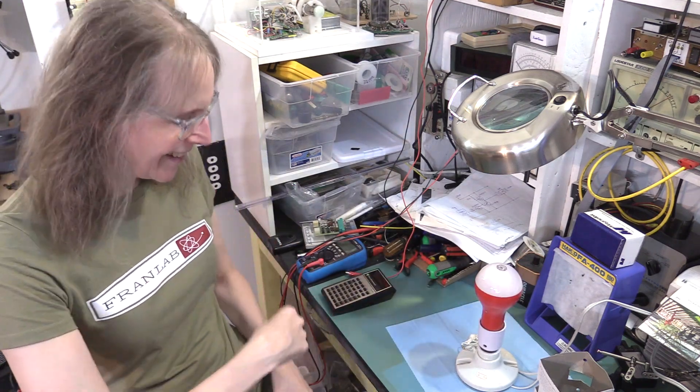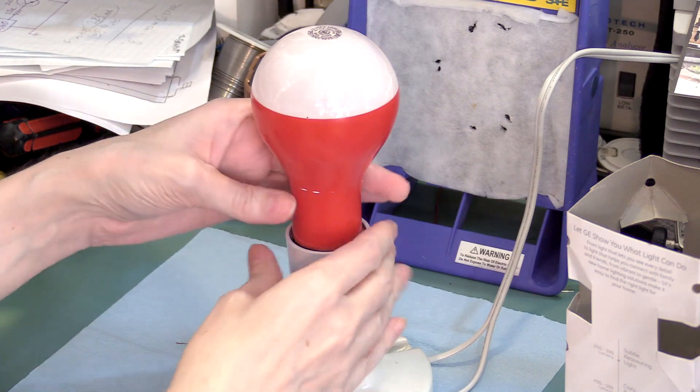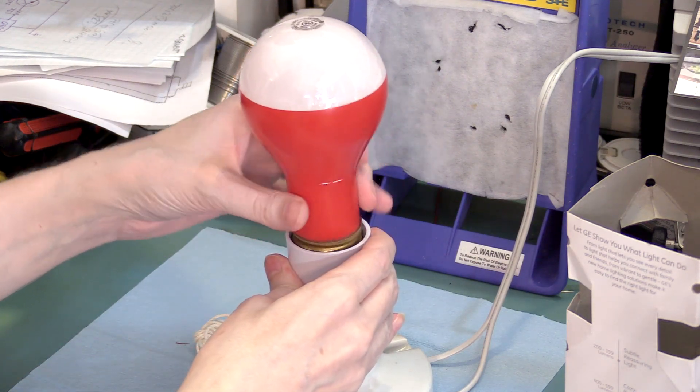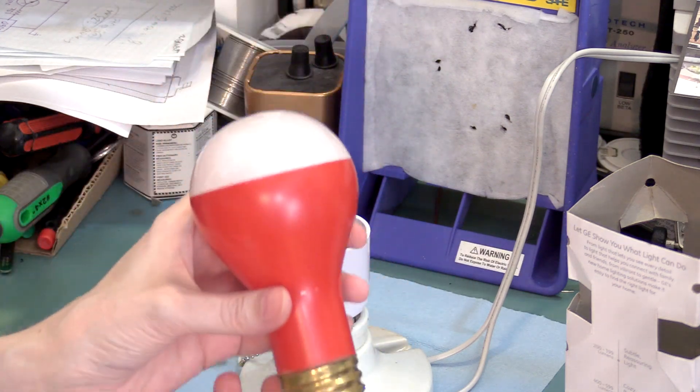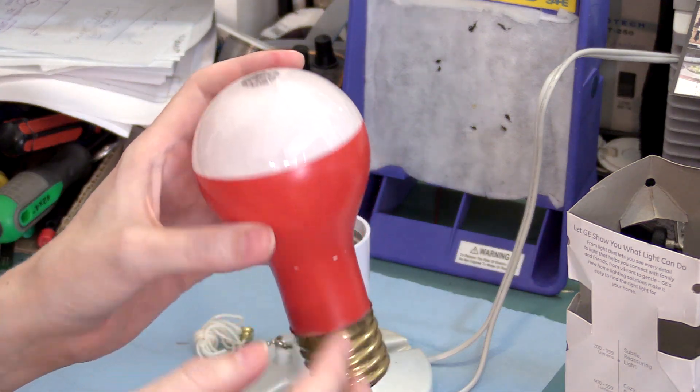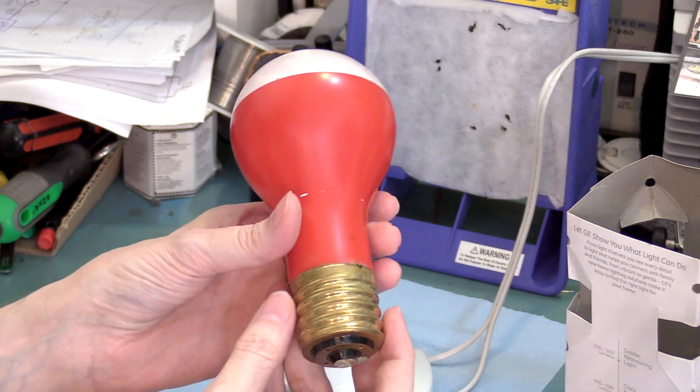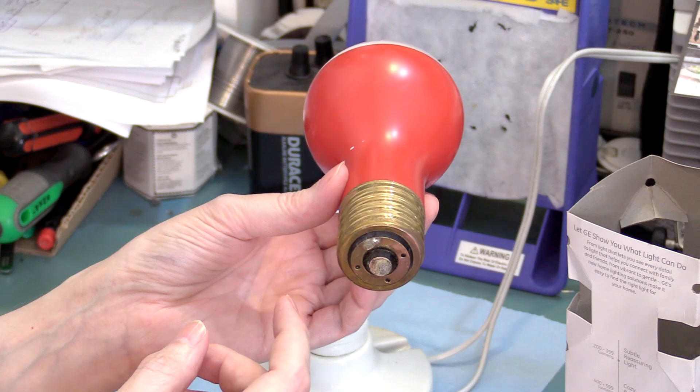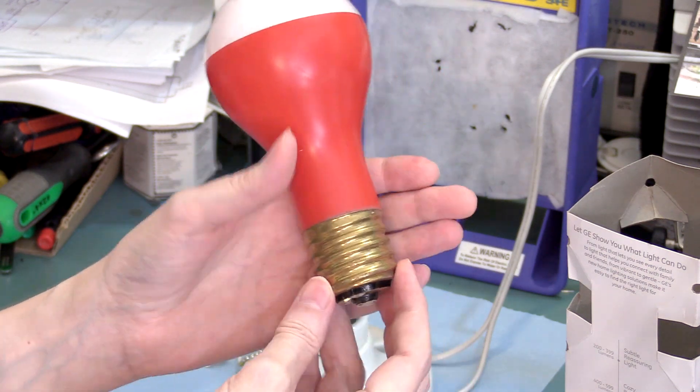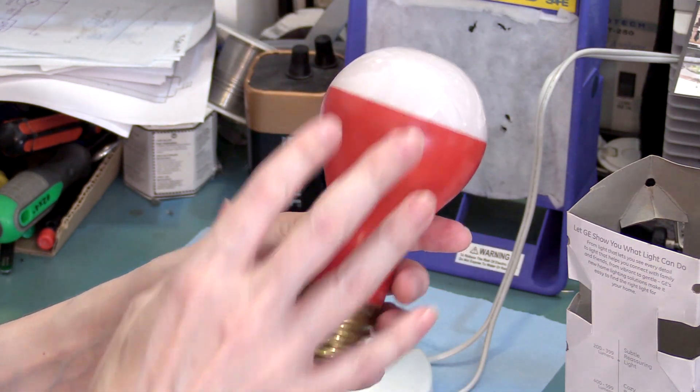Alright, here it is. For those who are wondering if this is an LED bulb, it is not. This is a tungsten light bulb. And I'll explain in a second why that is. But yeah, and you know this is a big bulb. It's not just big here, it's big here.